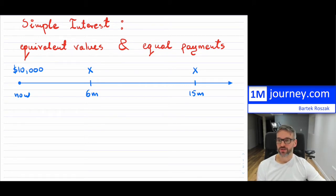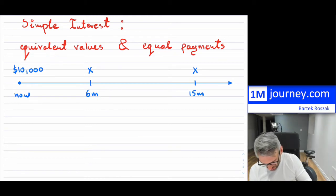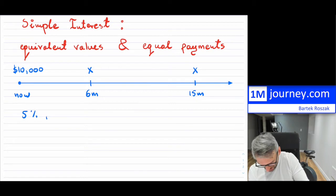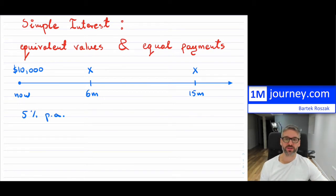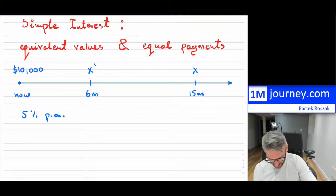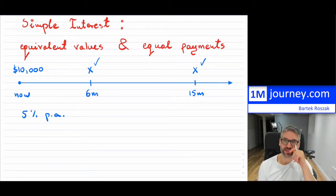We need the simple interest rate per annum. Let's say we're going to use a rate of 5% per annum, and it is simple interest — so this is not compounding at all. So how would we find these two payments so that we have an equivalent value of $10,000 for a debt we have taken out?